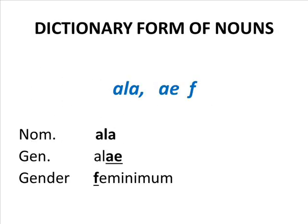It is important to remember that each Latin noun must be learned in its dictionary form. This form consists of three components: the full form of the nominative singular, the genitive singular ending indicating the type of declension, and the definition of the grammar gender with the letters M, F, N.